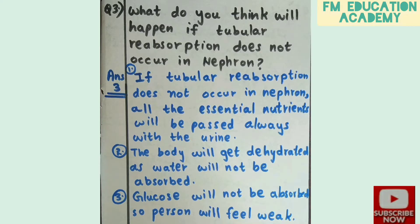Third question: what do you think will happen if tubular reabsorption does not occur in nephron? If tubular reabsorption does not occur in the nephron, all the essential nutrients will be passed out with the urine. As tubular reabsorption occurs in the DCT where nutrients are reabsorbed, when it does not occur, they pass with urine. The body will get dehydrated as water will not be absorbed, and the person will feel weak.